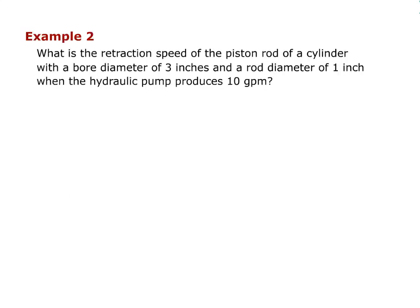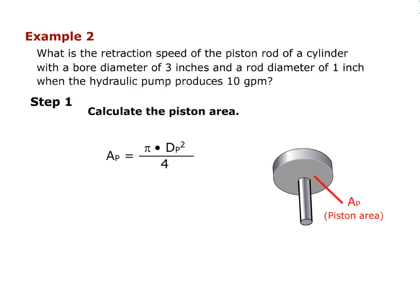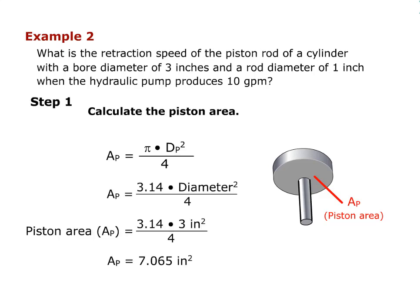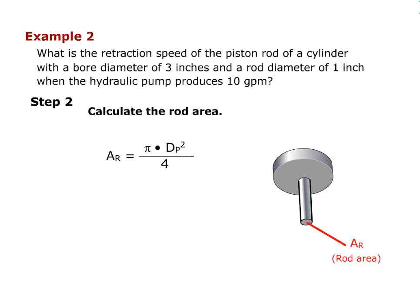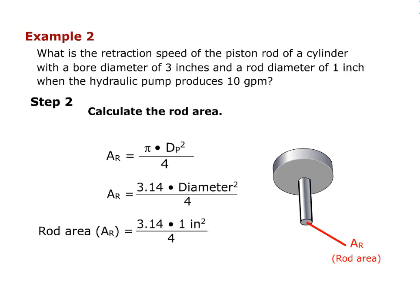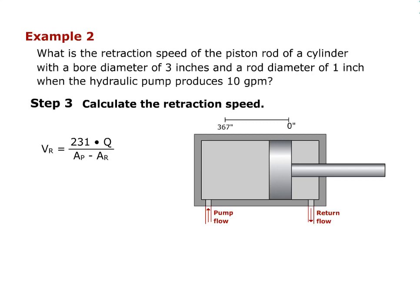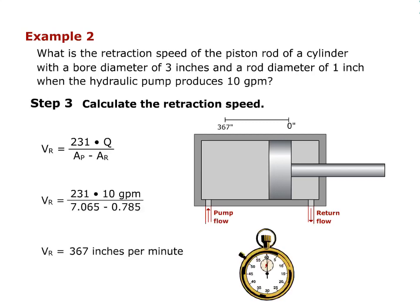What is the retraction speed of the piston rod of a cylinder with a bore diameter of 3 inches and a rod diameter of 1 inch when the hydraulic pump produces 10 gallons per minute? Step 1: Calculate the piston area as shown. Step 2: Calculate the rod area as shown. Step 3: Calculate the retraction speed as shown. The retraction speed is 367 inches per minute.